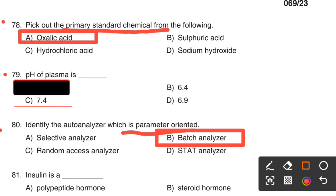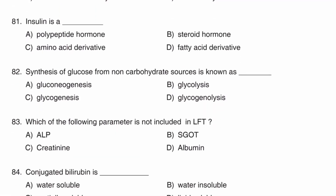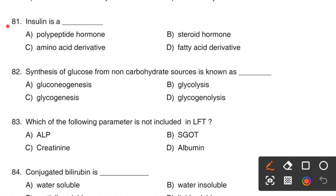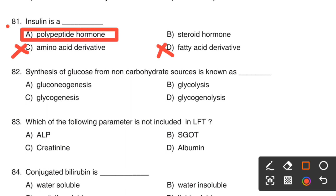Here comes the next question. Insulin is a dash: Option A, Polypeptide hormone. Option B, Steroid hormone. Option C, Amino acid derivative. Option D, Fatty acid derivative. Insulin is a hormone, so we can omit the last two options. The right answer is Option A, Polypeptide hormone.